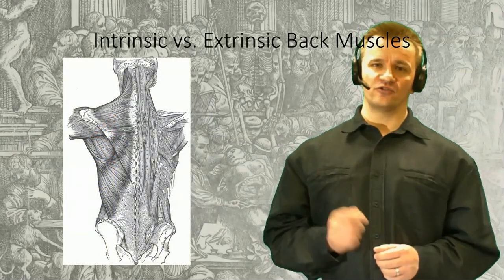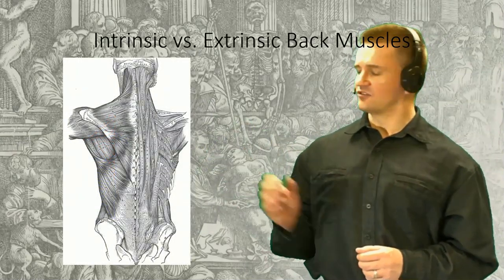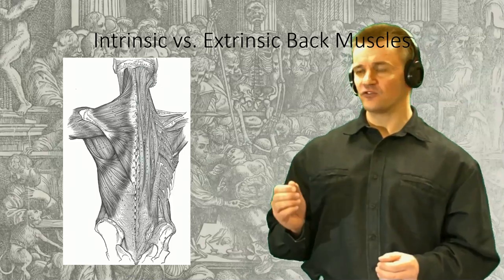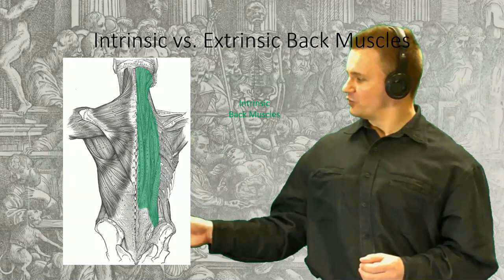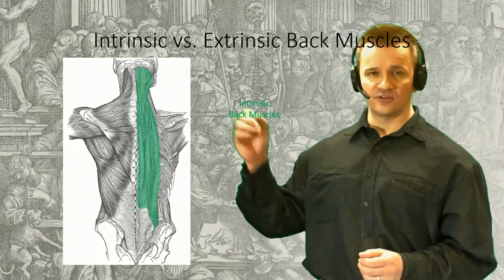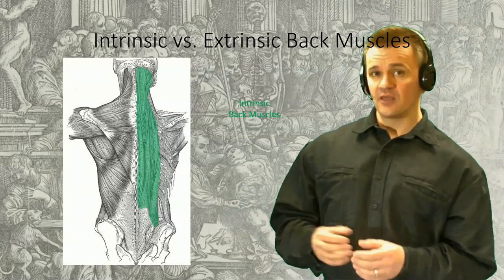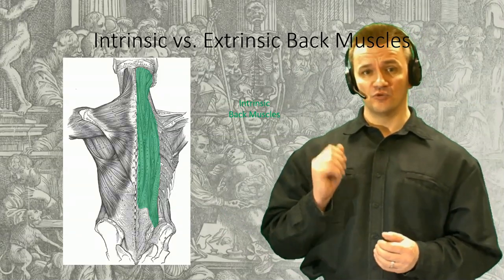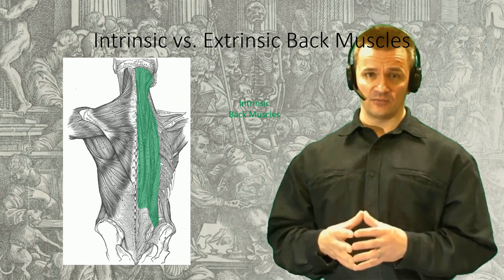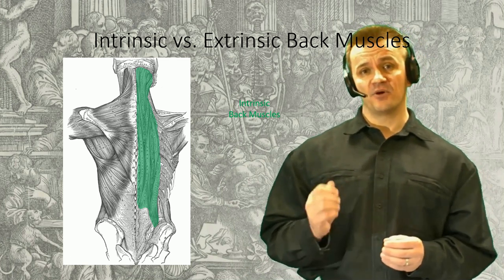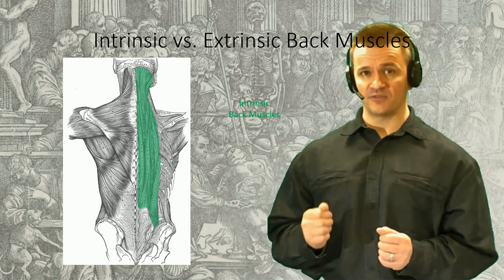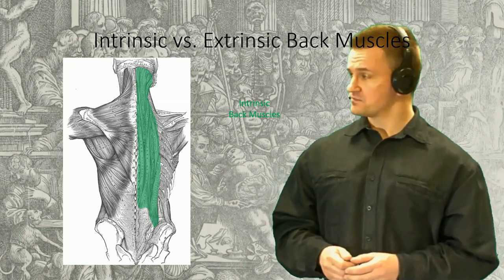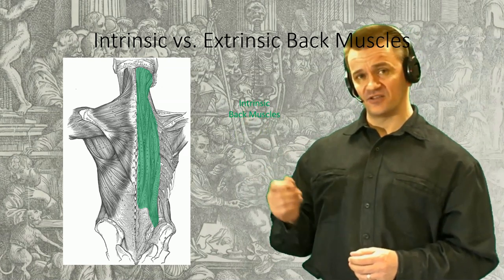The lecture is divided into two segments based on a broad classification system we use for grouping the muscles of the back. The first group involves muscles that both originate and insert on the vertebral column, although at different levels. These are the intrinsic muscles of the back. They're involved in movement of the back and the vertebral column and are segmentally innervated by the posterior running branches coming off the spinal nerves, commonly referred to as the dorsal primary rami. We'll get back to these in the second session.